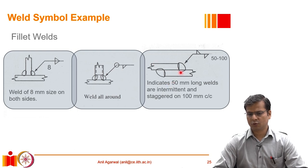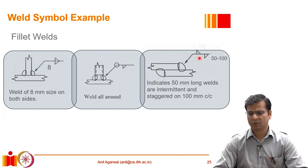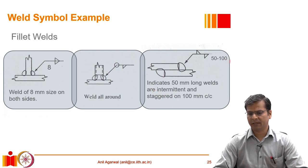For a lap joint, the arrow shows two fillet symbols that are staggered rather than overlapping. The size should ideally be mentioned, but in this example it is omitted. After the weld symbol, it states 50 over 100, meaning the weld length is 50 mm and the subsequent spacing is 100 mm center-to-center. These are intermittent welds, each 50 mm long with a 50 mm gap between them, giving a 100 mm center-to-center spacing.